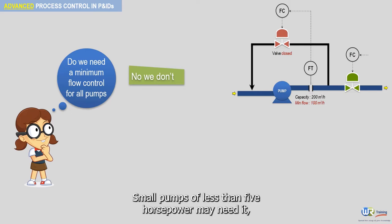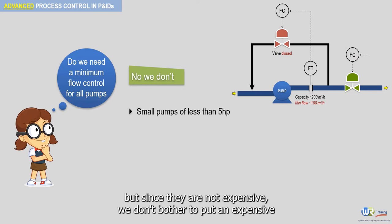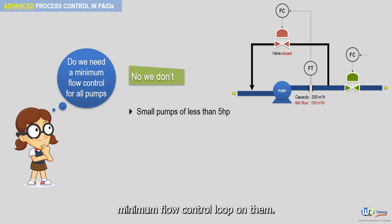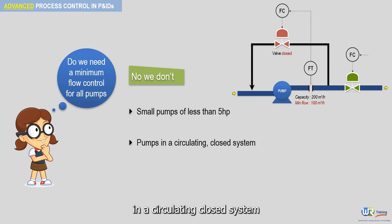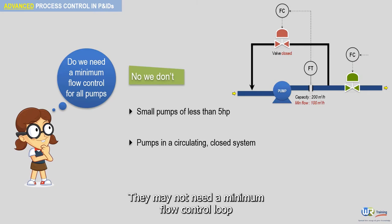Small pumps of less than 5 horsepower may need it, but since they are not expensive, we don't bother to put an expensive minimum flow control loop on them. Another example is pumps in a circulating closed system — they may not need a minimum flow control loop because the flow in such pumps is fairly constant.